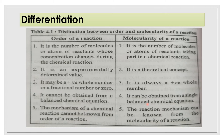Examples like unimolecular and bimolecular reactions are all balanced chemical equations from which molecularity can be obtained. Finally, the mechanism of a chemical reaction cannot be known from the order of reaction, but the reaction mechanism can be known from the molecularity of the reaction.